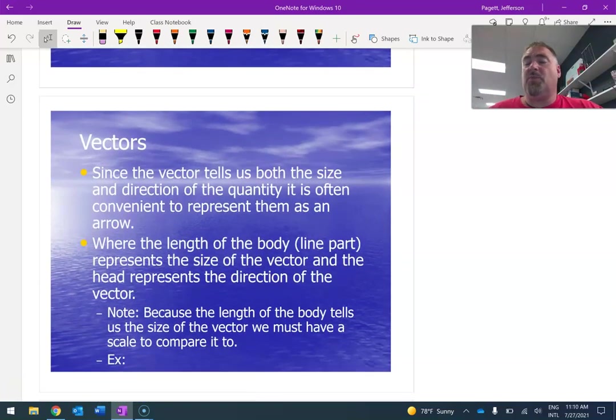Whereas vectors give us more information. They give us both size and direction. We had many discussions about why vectors were so needed. The fact that why we have to have that direction in there as well. But going back, since vectors tell us both size and direction of the quantity, it's often convenient to represent them as an arrow. Where the length of the body, the line part, represents the size of the vector, and the head represents the direction.